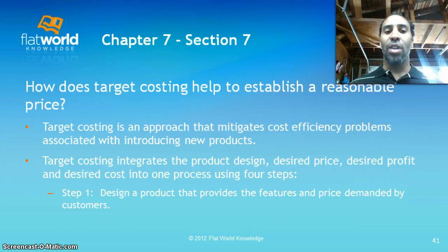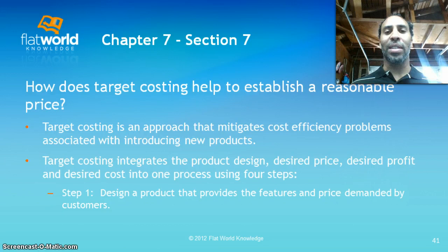How does target costing help establish a reasonable price? Target costing is an approach that mitigates cost efficiency problems associated with introducing new products. Target costing integrates product design, desired price, desired profit, and desired cost into one process using four steps. The idea is to establish a cost target first, then engineer the product so that costs end up at that level — it has a lot to do with engineering and product design.